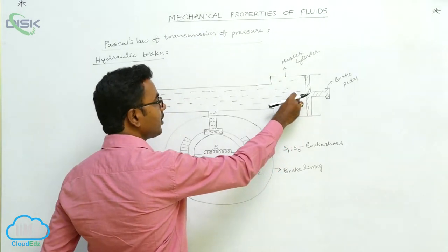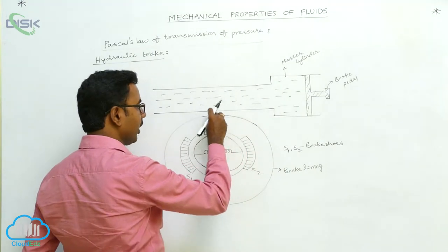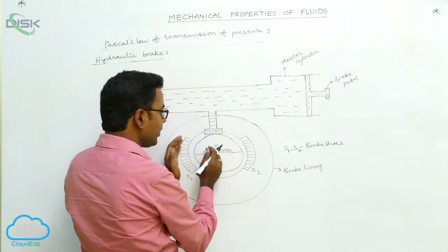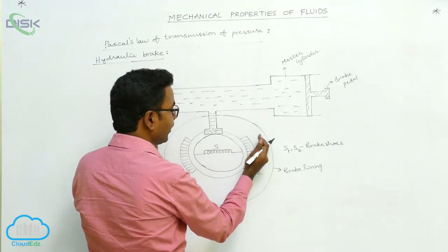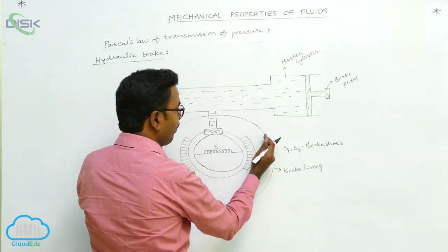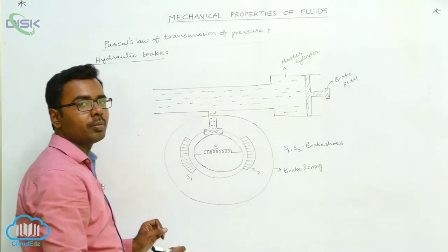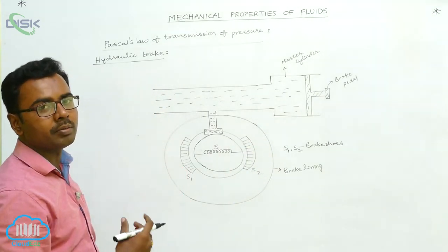The same pressure is transmitted in all directions. This presses the S1 and S2 brake shoes against the brake lining. Whenever S1 and S2 are pressed against the brake lining, retardation is produced, meaning the vehicle slows down and comes to rest.